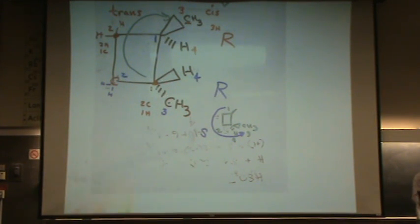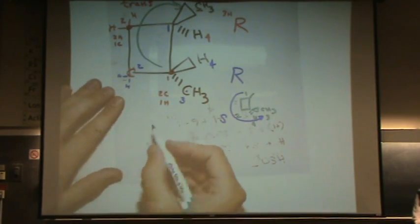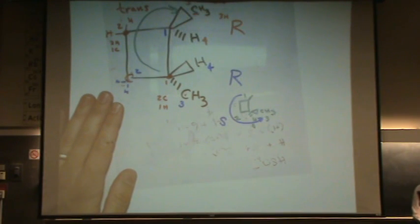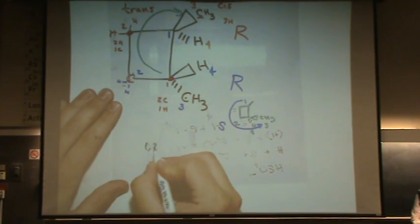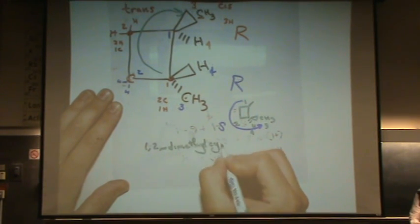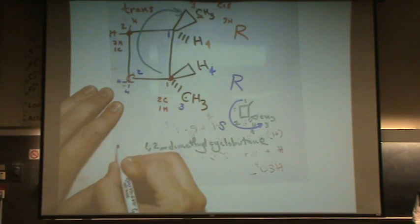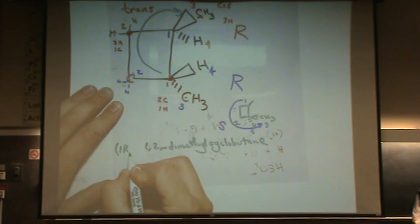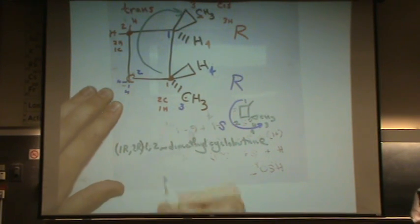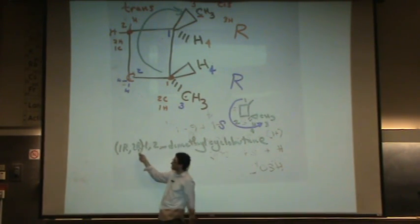Any questions on this? So this is an RR. If you wanted to name this, it'd be, so this is a cyclobutane, a 1,2-dimethylcyclobutane. And it's RR. So you go one, R, two, R. So you just put the designation in the front. Position one and position two are both on this.